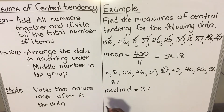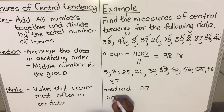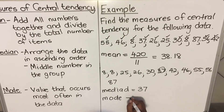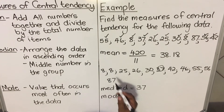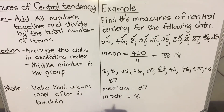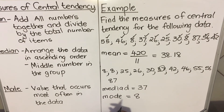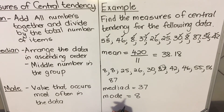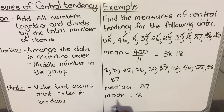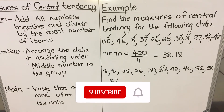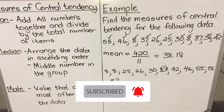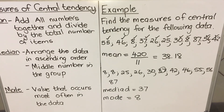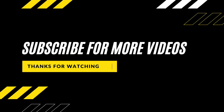And then my mode. My mode is the most occurring number. In this data set, 8 appears twice, so my mode is 8. If another number had appeared three times, that would be my mode. So this is how you do the measures of central tendency — the mean, the median, and the mode. That's the end of our lesson.